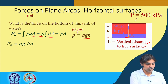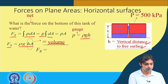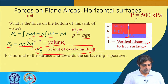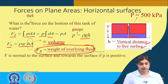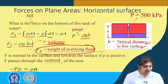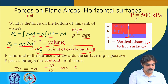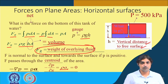Fr equals ρghA, which equals the weight of the overlying fluid. Fr is normal to the surface and towards the surface if P is positive. Fr passes through the centroid of the area. There is no acceleration in the x direction, so there is no pressure variation in x — whatever variation exists is in the z direction.